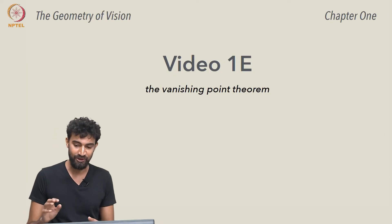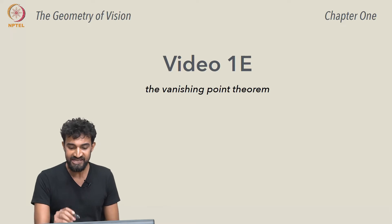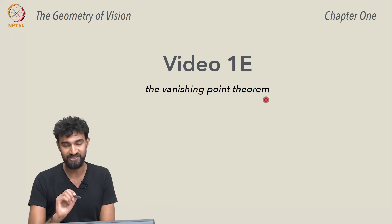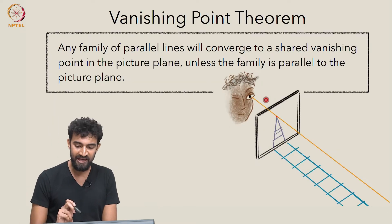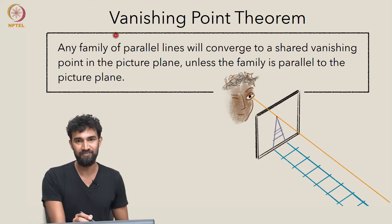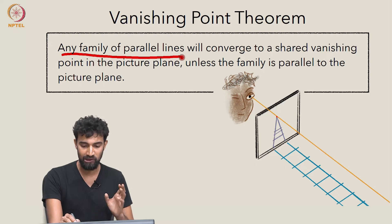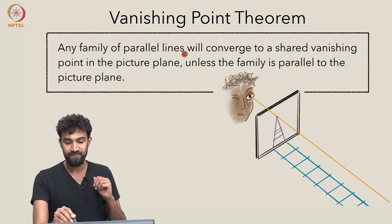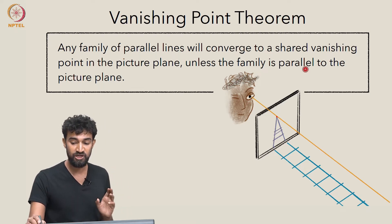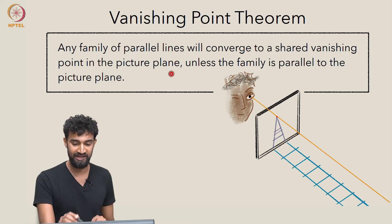Let's put all these observations together and state what's known as the vanishing point theorem. The vanishing point theorem simply states that any family of parallel lines in space is going to converge to a shared vanishing point in the picture plane.